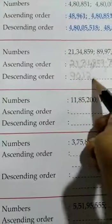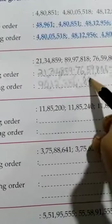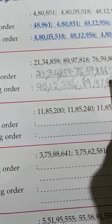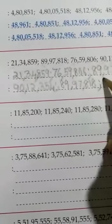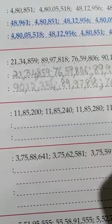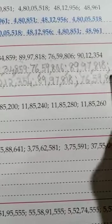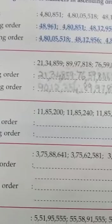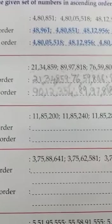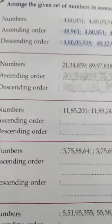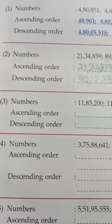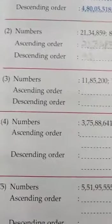Descending order means the opposite — the number you wrote last in ascending order will be the first to write. So the order is: 90,12,354 first, then 89,97,818, then 76,59,806, and the smallest — 21,34,859 — will be last. That is how you write in ascending and descending order.